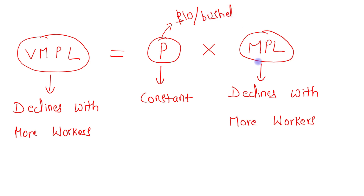The property of labor is diminishing marginal product — it will continuously decline. So if price is constant and MPL is declining with more workers, then definitely the value of marginal product of labor will also decline with more workers.